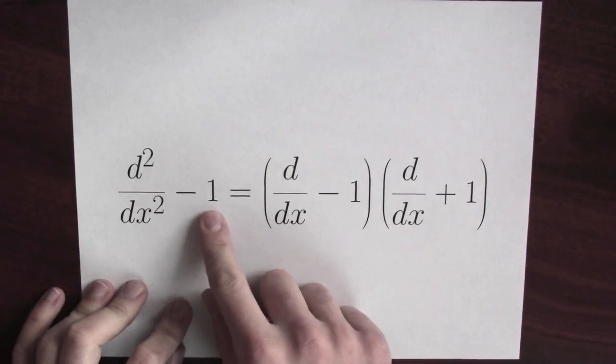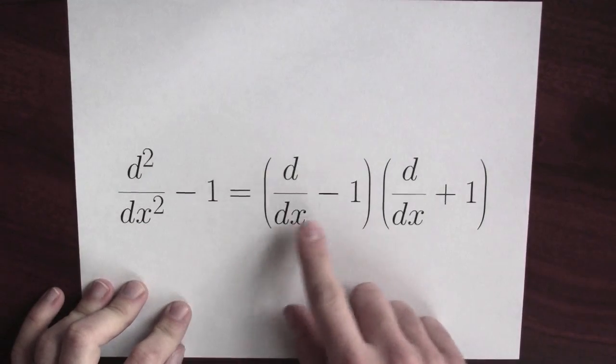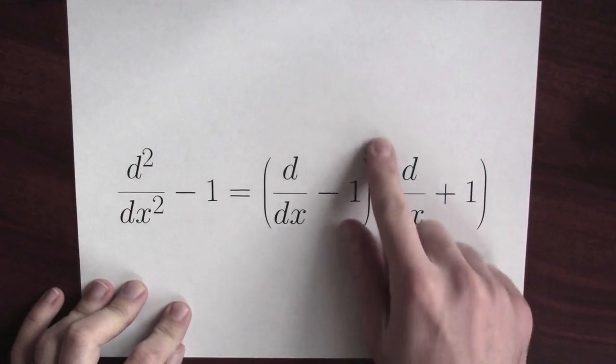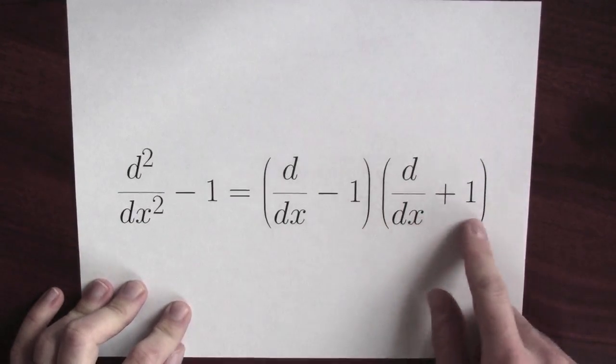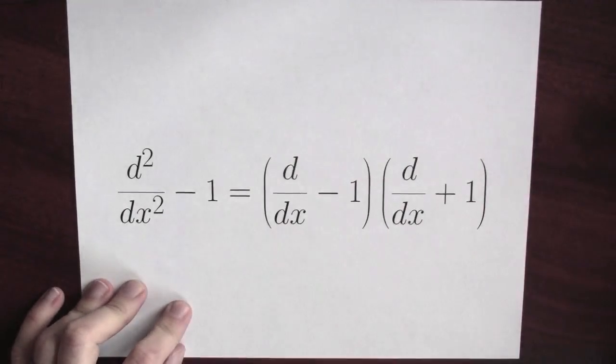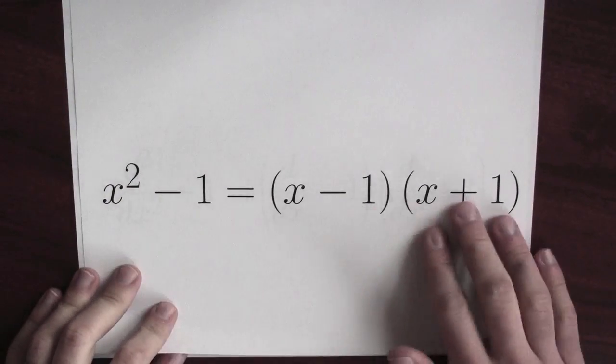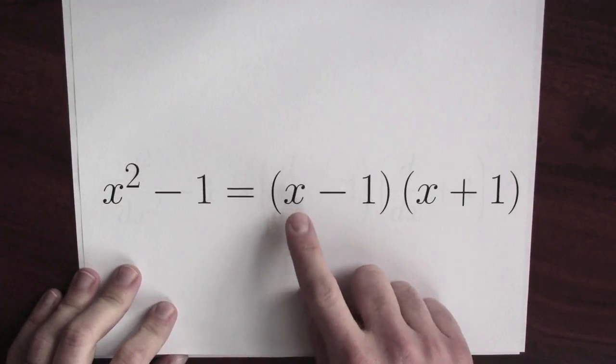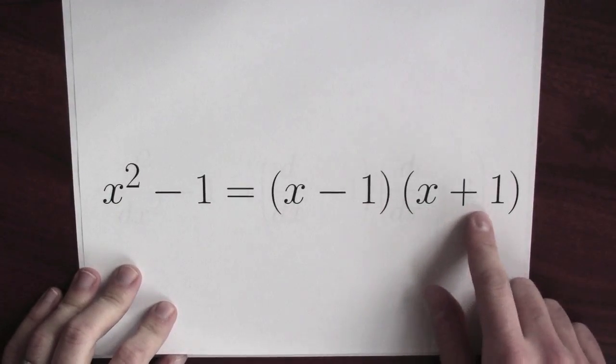The second derivative minus 1. What does it even mean? Equals the derivative minus 1. What am I doing here? Multiplying? Who knows? The derivative plus 1. This sort of nonsense looks similar to something very reasonable. That x squared minus 1 is x minus 1 times x plus 1.